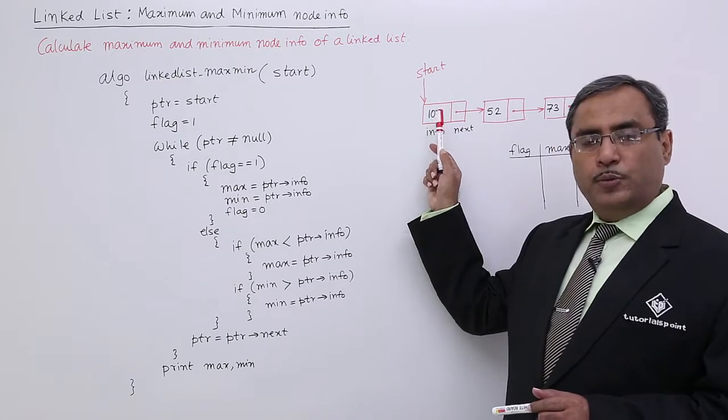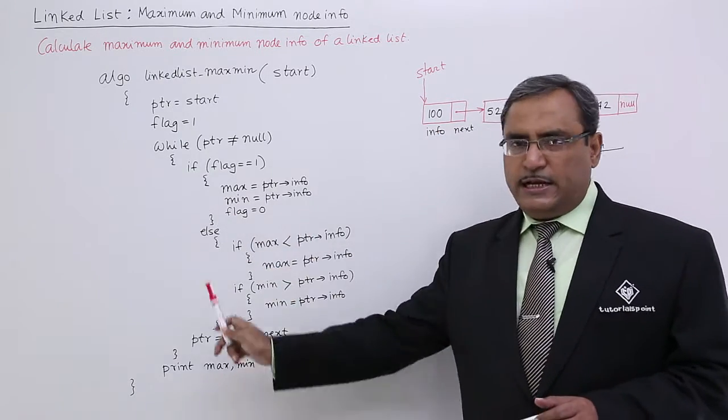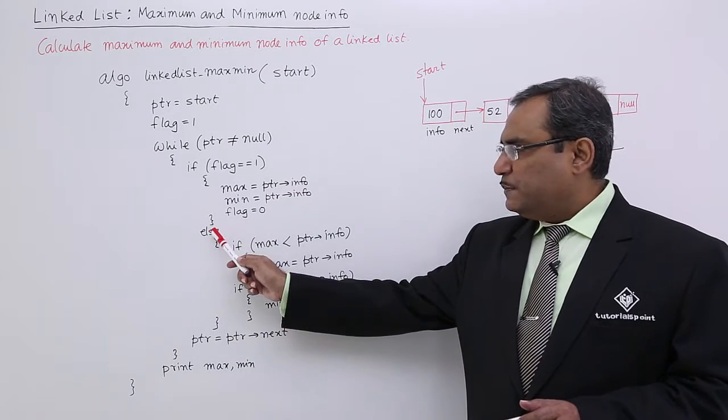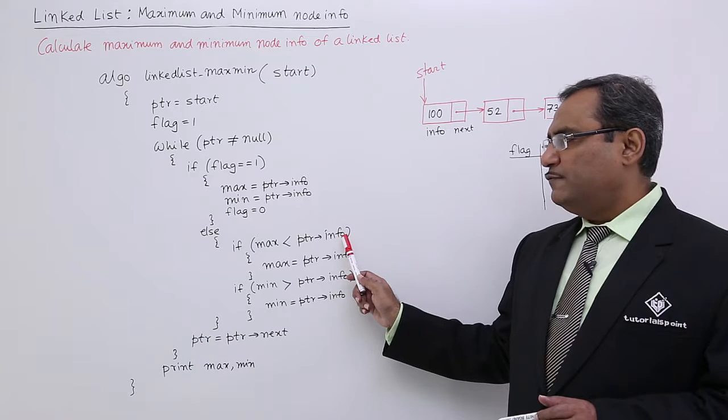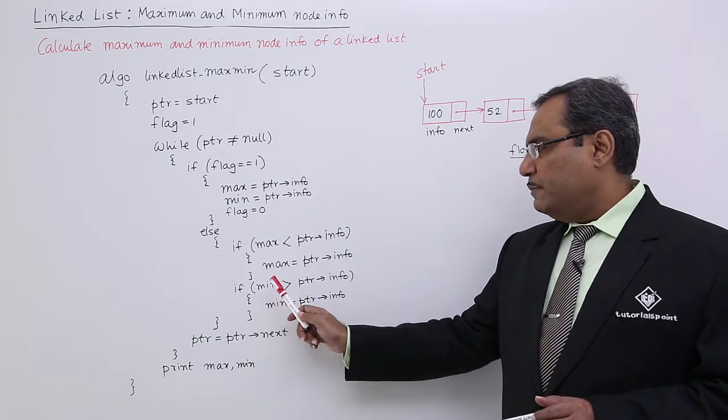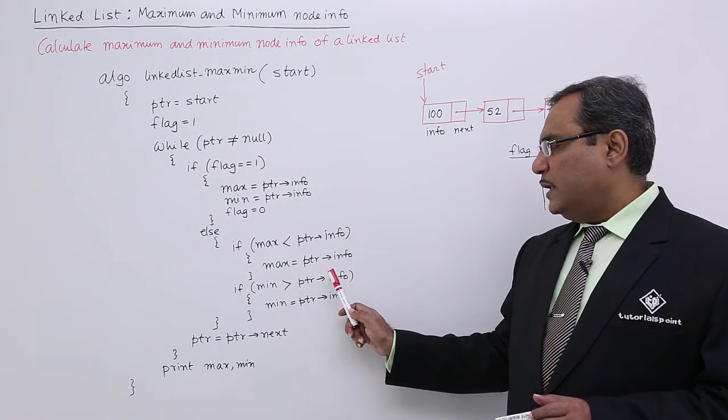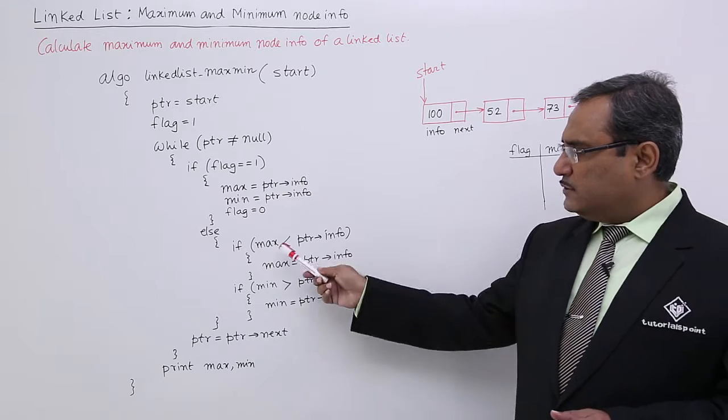Now in the next iterations, the else part will get executed. If max is less than ptr->info, max will be updated with that value. If min is greater than ptr->info, then min will be updated by ptr->info. This is very common to calculate the maximum and minimum.